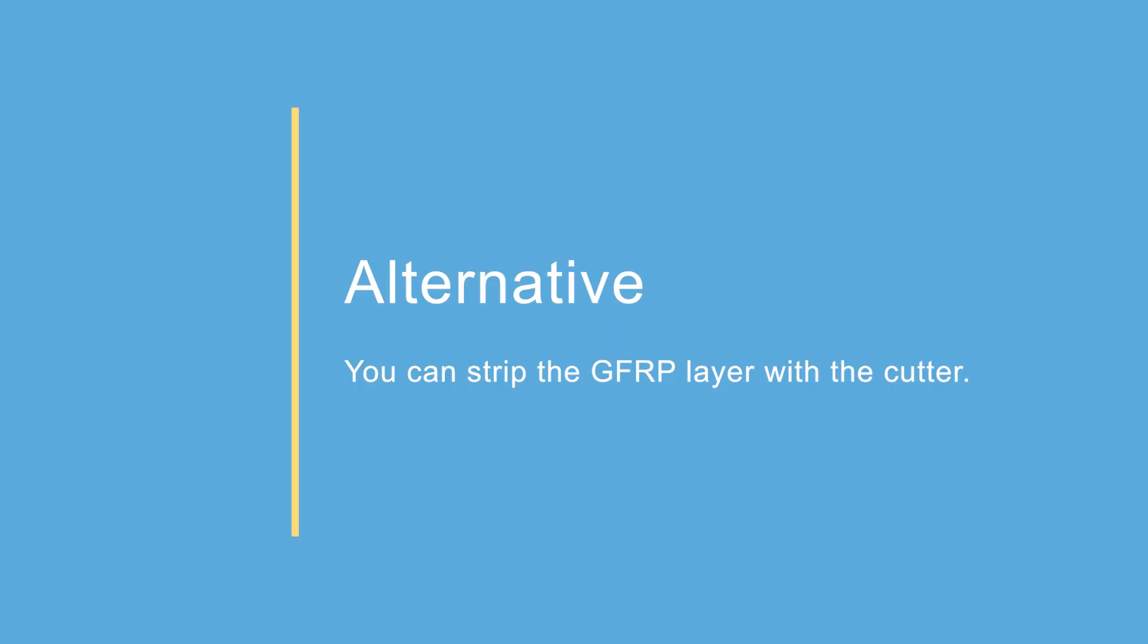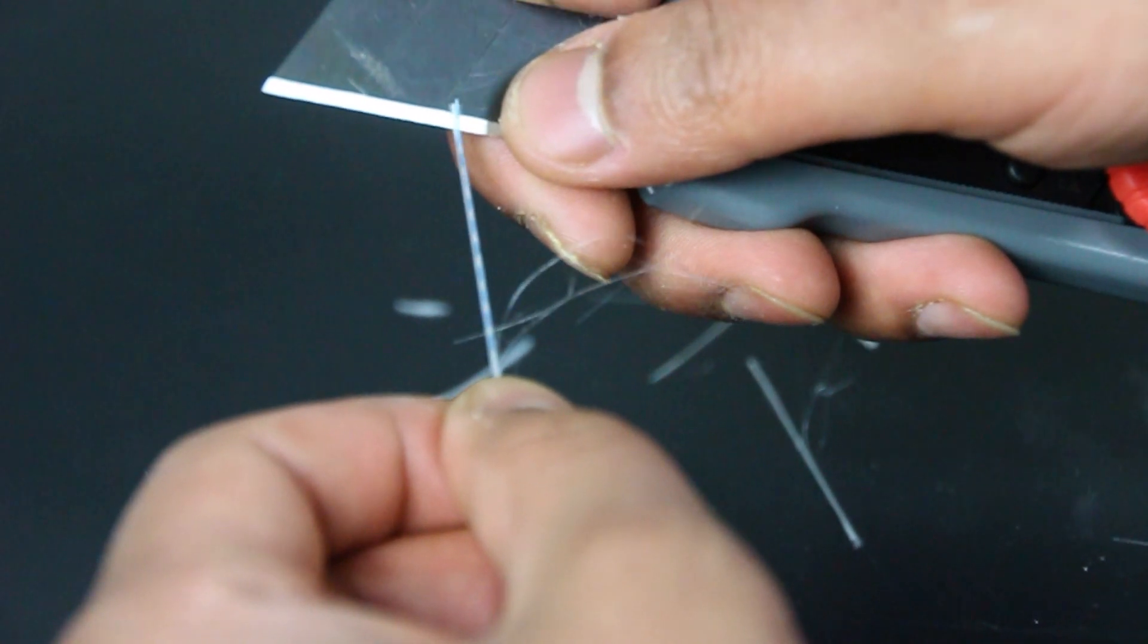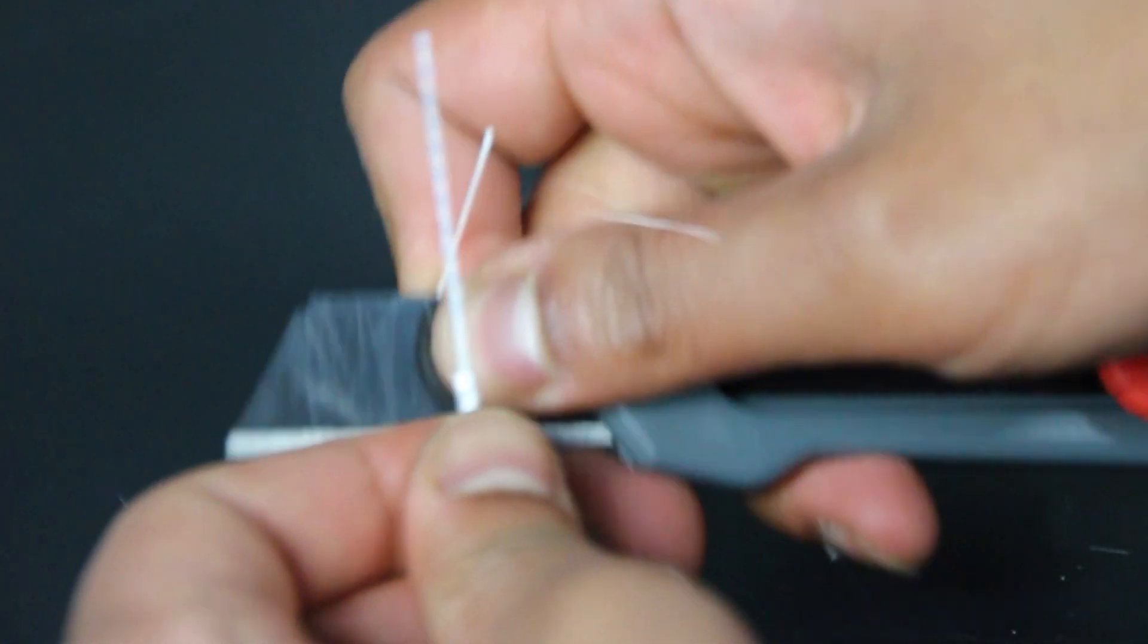As an alternative, you can always strip the GFRP layer with the cutter as well. In that case, be extra careful not to break or damage the fiber.